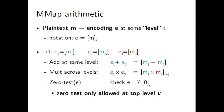For multilinear maps, we have some plaintext M, which we encode at some level I — denoted with square brackets. The arithmetic you can do is addition and multiplication. If you have two encodings at the same level I, you can add them to get an encoding of the sum at the same level. For multiplication, you can multiply encodings at different levels I and J; the result has level I plus J. You can also perform a zero test, but only at the top level K.